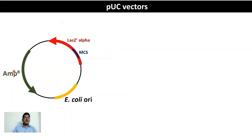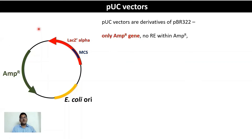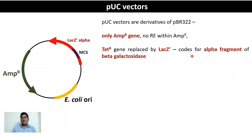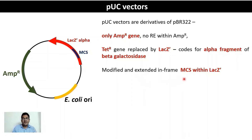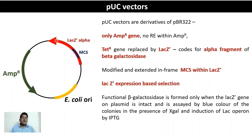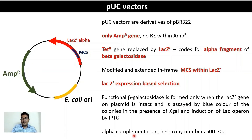pUC vectors retain only the ampicillin resistance gene; there is no restriction enzyme within it. The tetracycline gene is replaced by the lacZ' locus encoding the alpha fragment of beta-galactosidase. The MCS has been expanded within the lacZ' locus to contain many more restriction sites than are present in pBR322. A functional beta-galactosidase is formed only when the lacZ' locus on the plasmid is intact — implying a self-ligated plasmid — assayed by blue color in the presence of X-gal and IPTG. This process is alpha complementation.